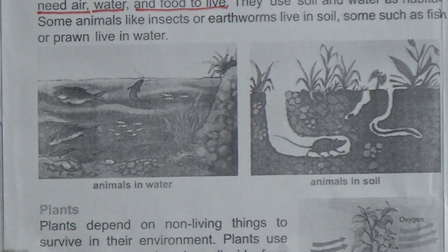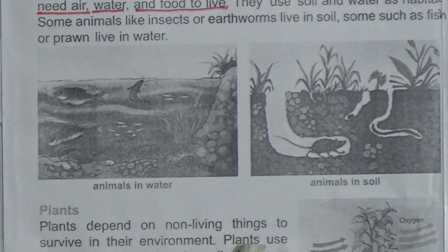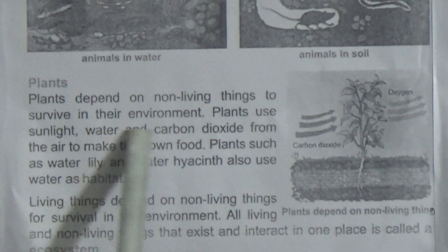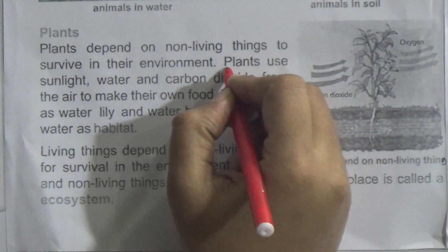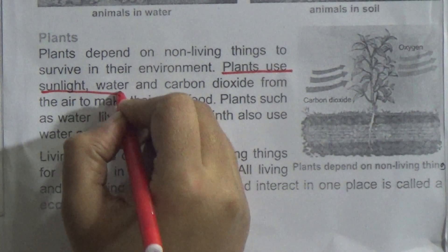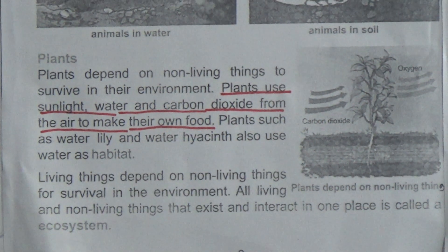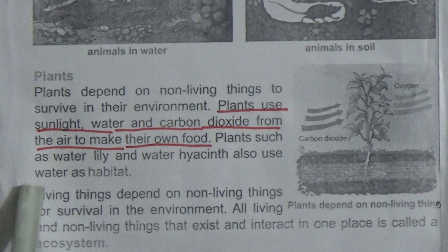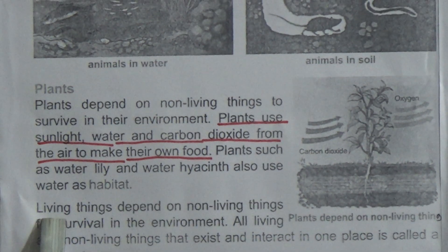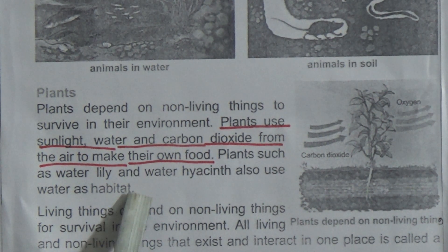The name of the next lesson is Plants. Plants depend on non-living things to survive in their environment. Plants use sunlight, water, and carbon dioxide from the air to make their own food. This line is also very important for you, so underline this line. Plants such as water lily and water hyacinth also use water as habitat — just like some animals also live in water, some plants also live in water.